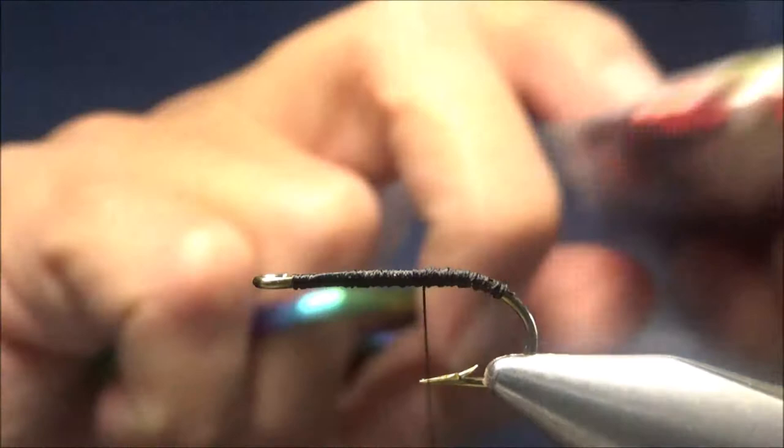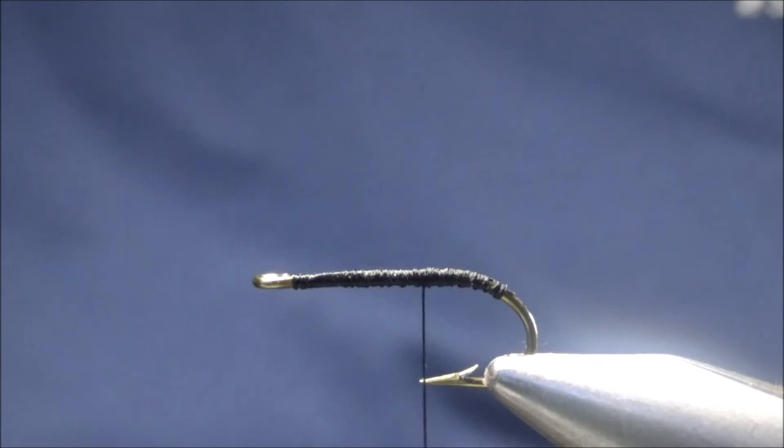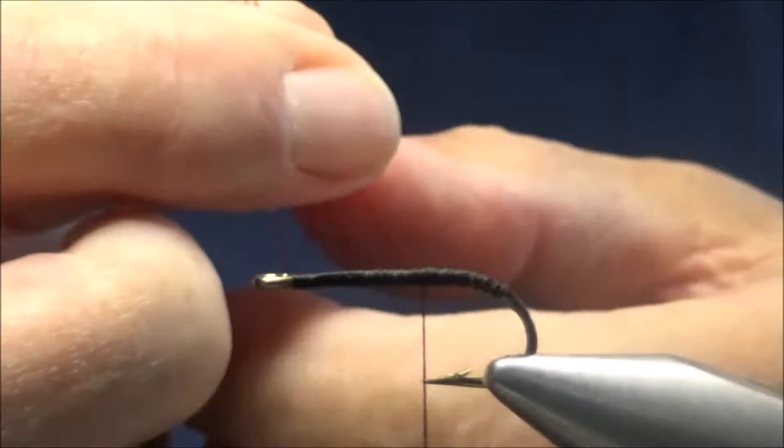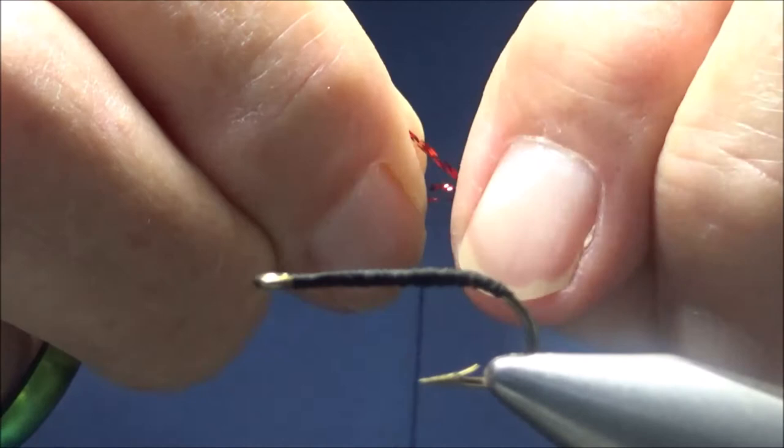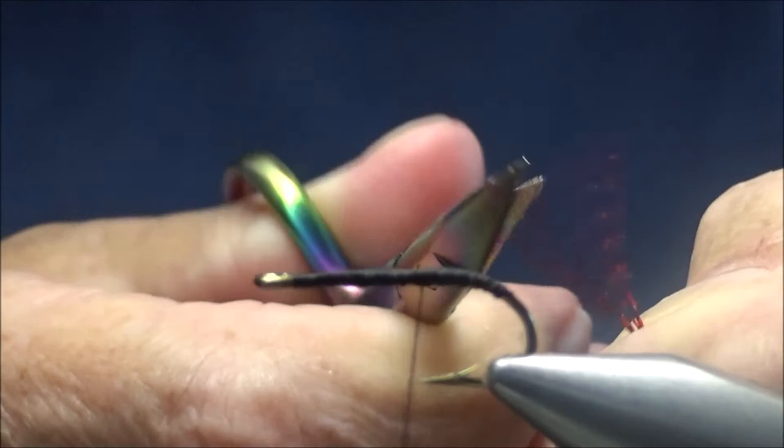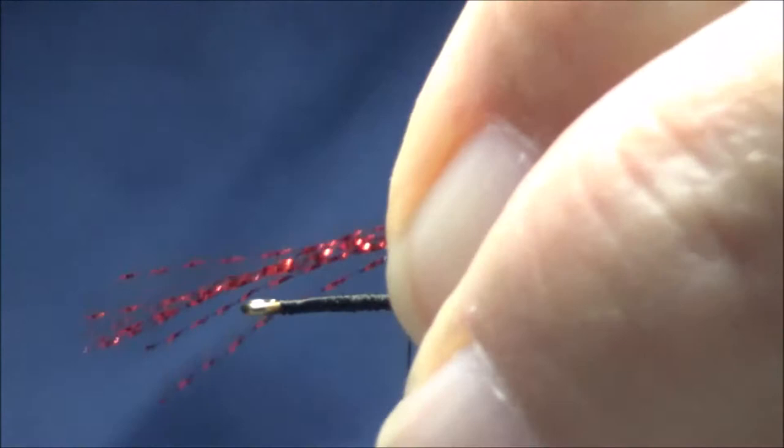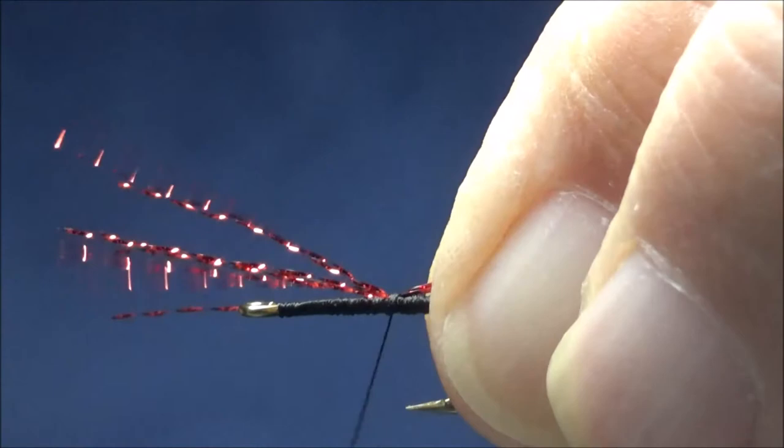For the tail of this pattern as a hot spot, I'm going to be using some crystal flash in red. I've taken one piece and folded it over a number of times. I'll fold it over once more and cut it off. I'm going to take it about the middle. Now I'm going to make a pinch wrap right on top of the shank here to make sure it stays in place.